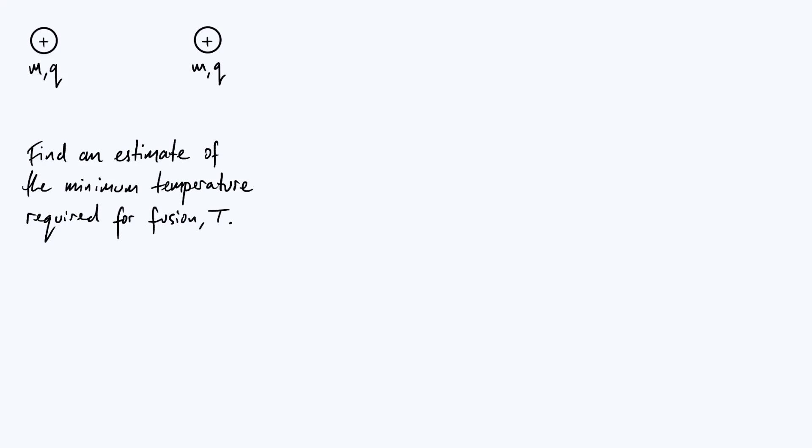So the setup here is that we've got two identical nuclei, each of which has mass m and positive charge q, and in order for these nuclei to fuse together they need to get sufficiently close to each other, but of course the obstacle is that they're both positively charged and therefore they're repelling each other.